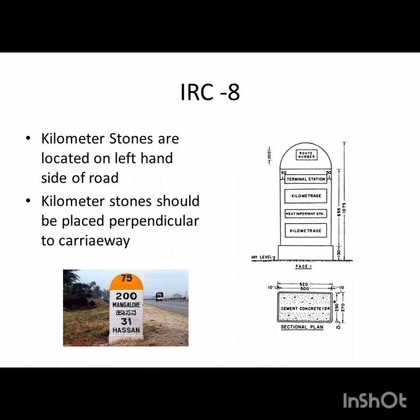You can see a sample kilometer stone where the route number is given. The route number is 75. The terminal station is Mangalur, which is 200 kilometers away, and the next important station is Hassan, which is 31 kilometers away.